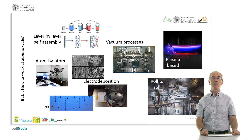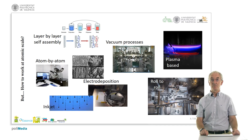Here you have ways to work with nanomaterials, which was the most difficult challenge at the time because first we couldn't see them. We introduced different electron microscopes which allowed us to see and handle things, then layer-by-layer assembly using the polarity of molecules, atom-by-atom deposition using microscopes shooting atoms at precise positions, inkjet printing with nano-sized drops falling onto the material, electrodeposition controlling the concentration, and vacuum processes allowing plasma and even industrial roll-to-roll processing.